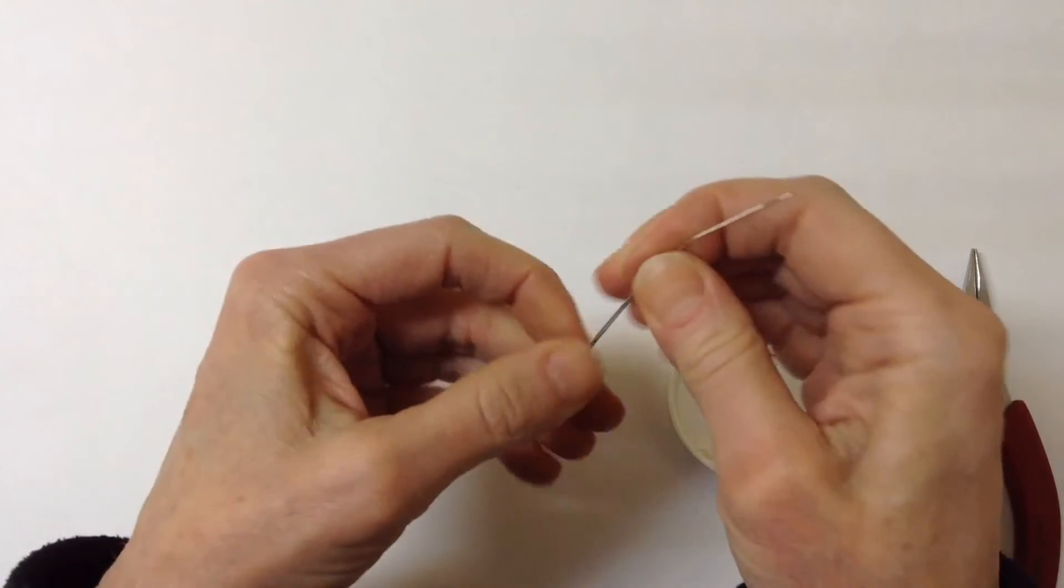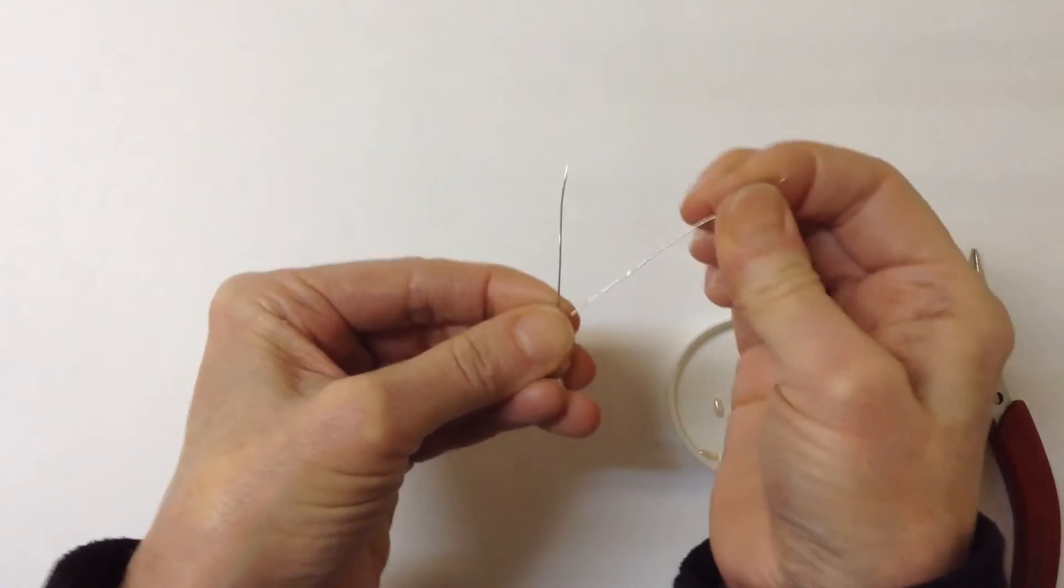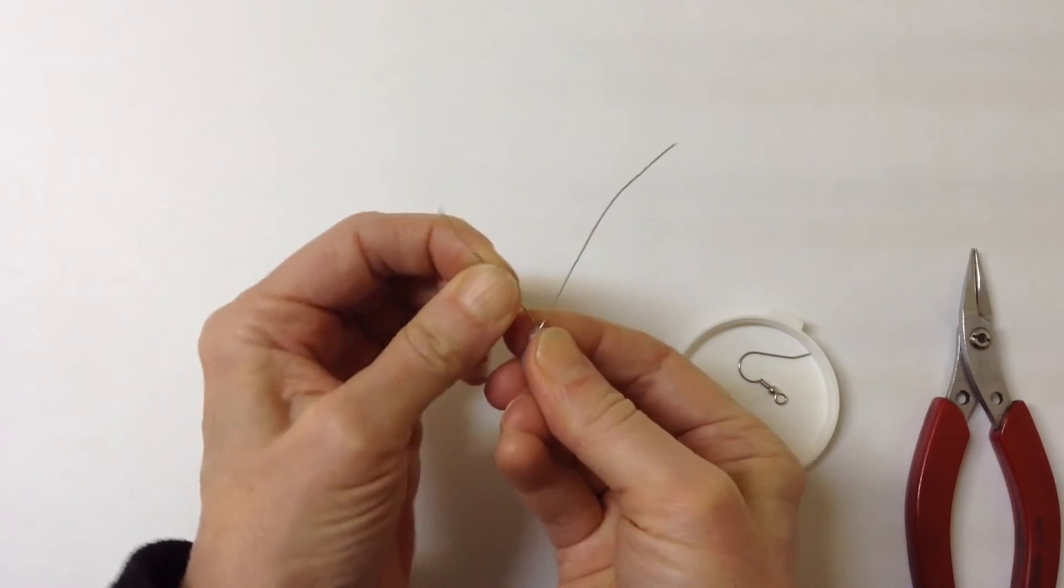Same thing, put both wires through and then you want to separate the wires. These are going to be the ears so pull this bead down and separate it.